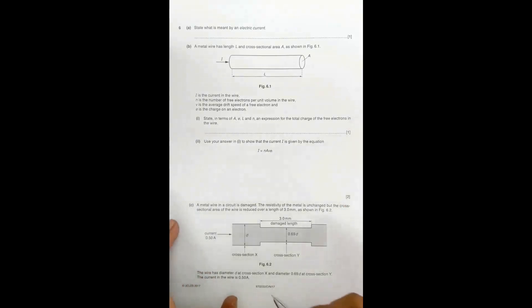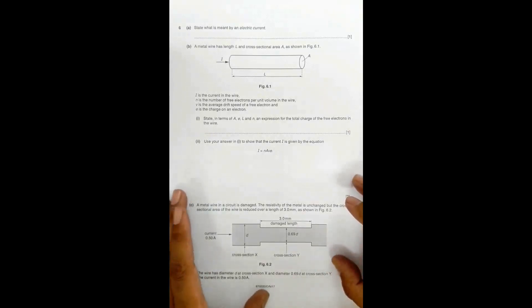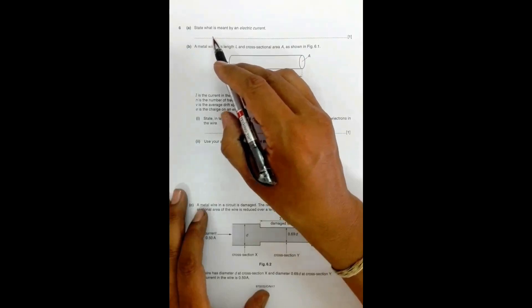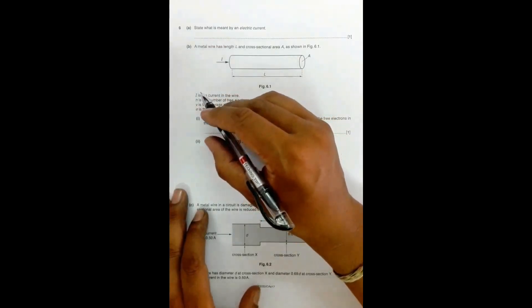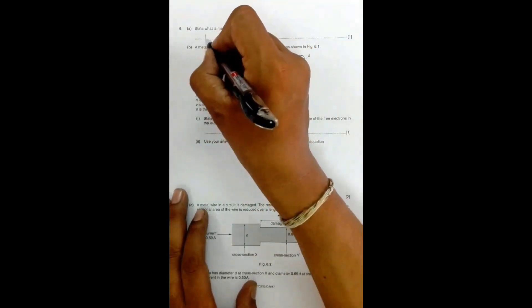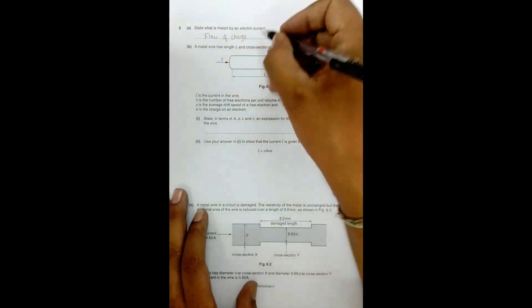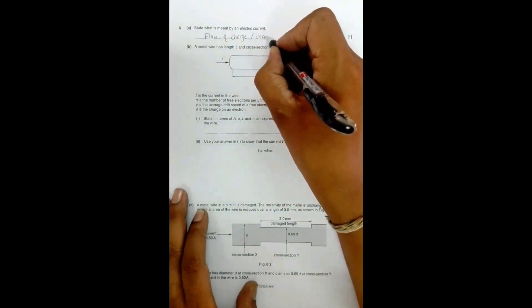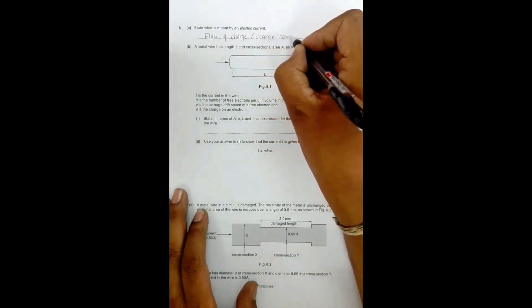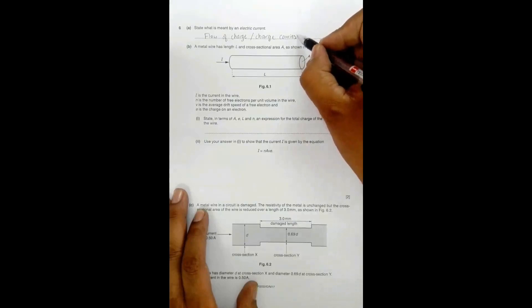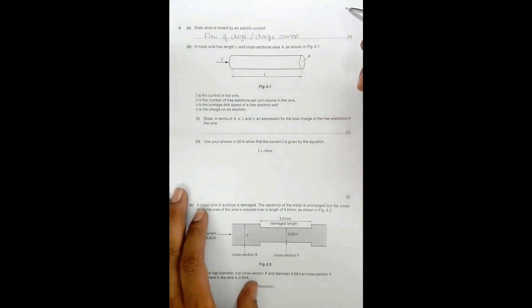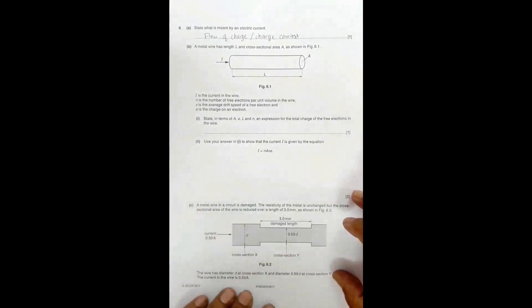This is the 2017 October/November Paper 22, question number six. In part 6a, it asks us to state what is meant by an electric current. Current is simply the flow of charge. We can also define it as the flow of charge carriers — which means free electrons, electrons and holes in semiconductors, and positive and negative ions in electrolytes.